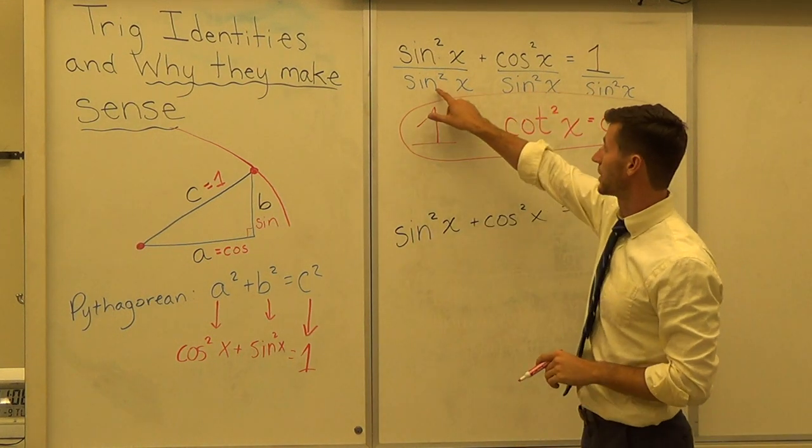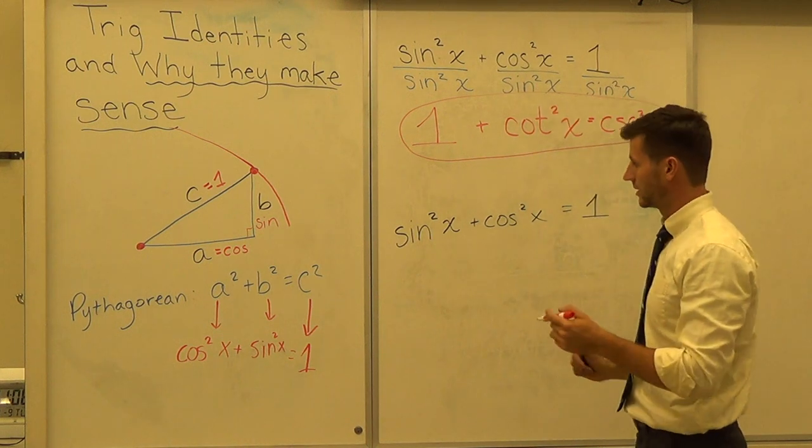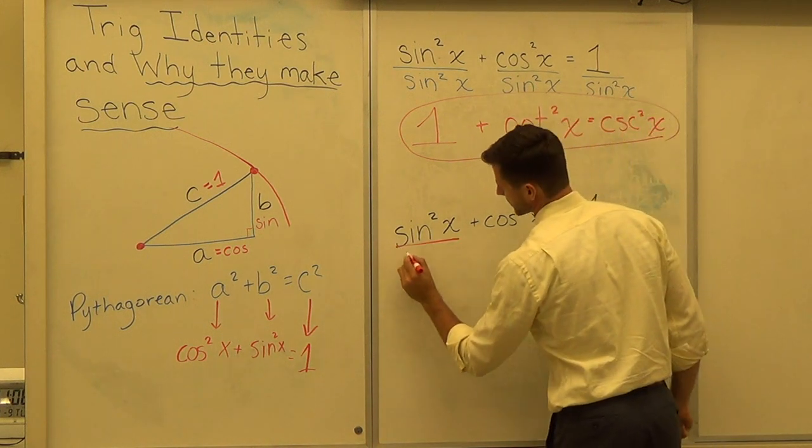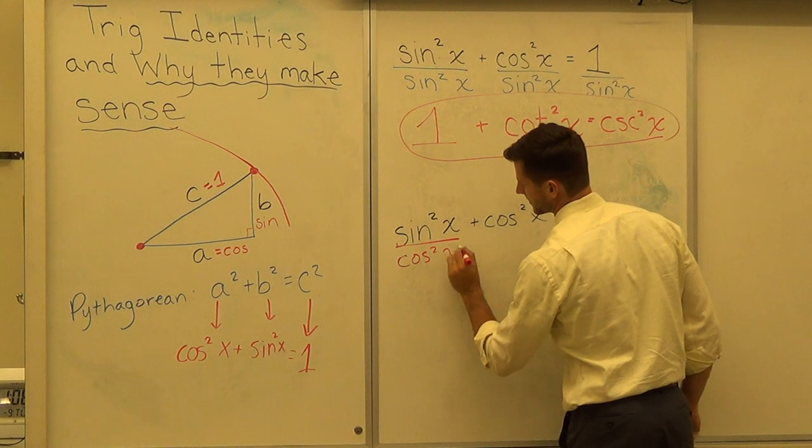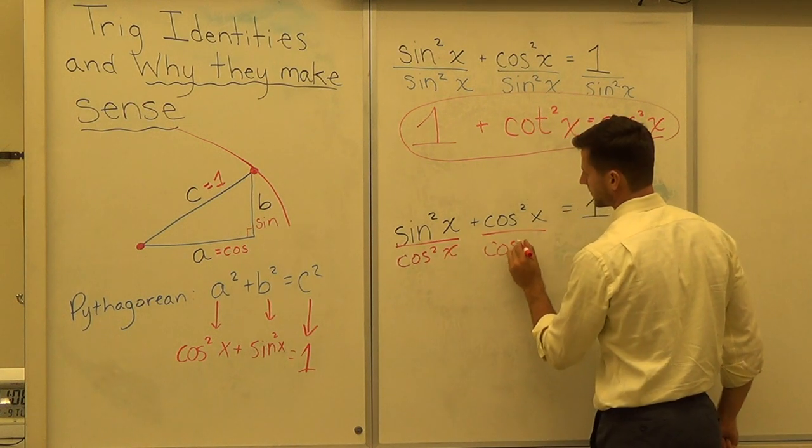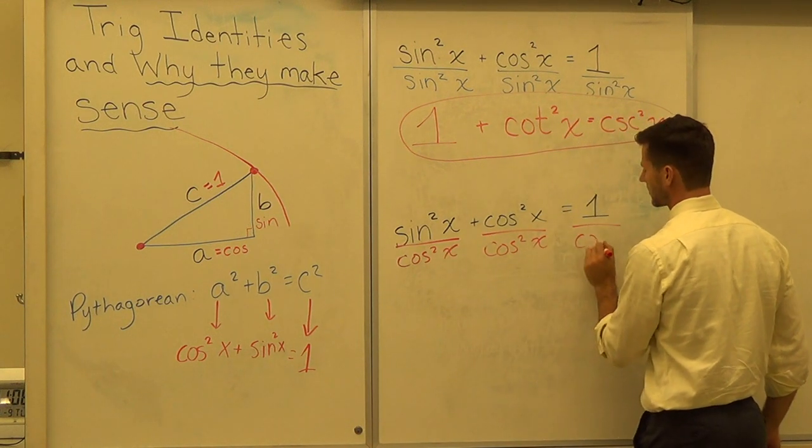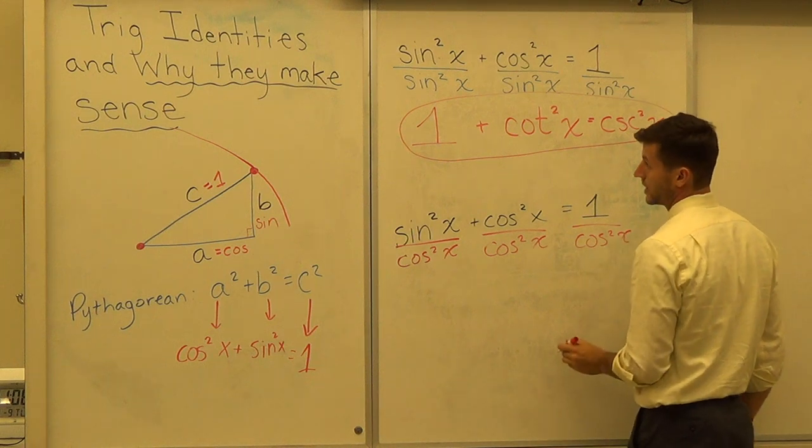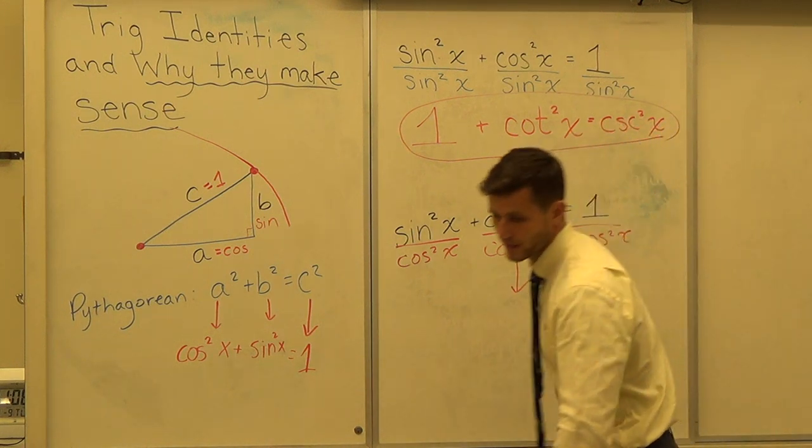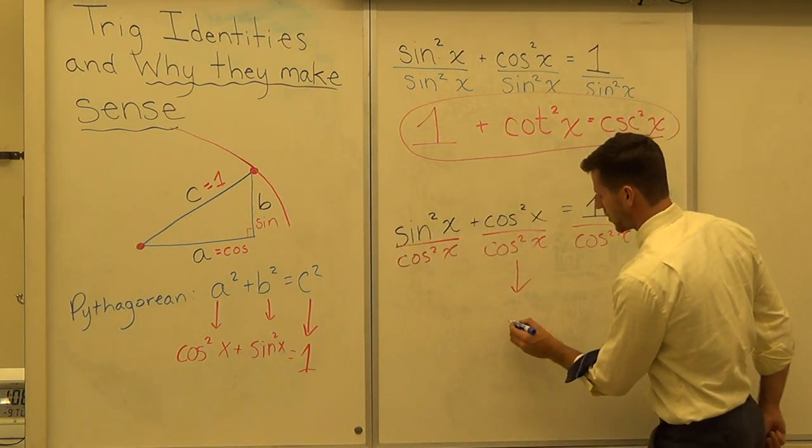Last one. We divided everything by sine squared X here. Let's try dividing everything by cosine squared X. Very similar. We have one piece cancel to make one whole.